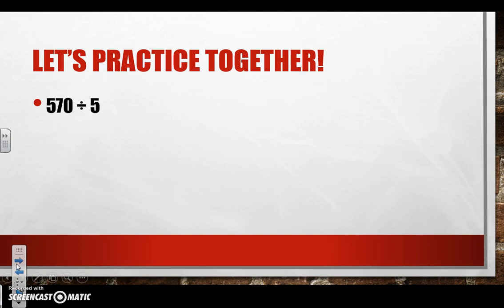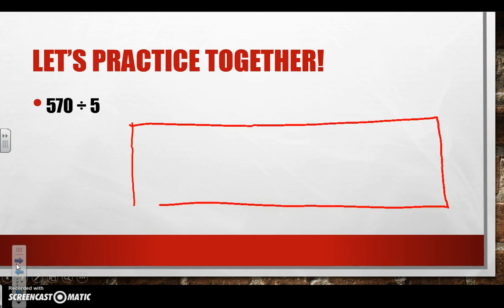Alright, let's try one together: 570 divided by 5. We know we need to start with drawing our array. Remember we're going to break it into four different squares for each of our place values that we may or may not use.